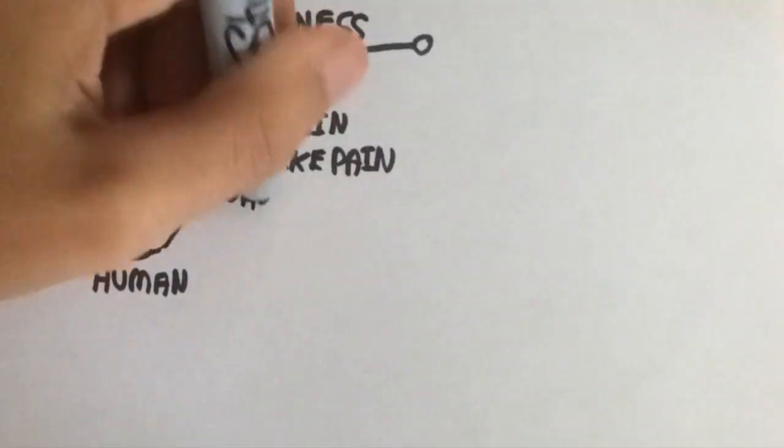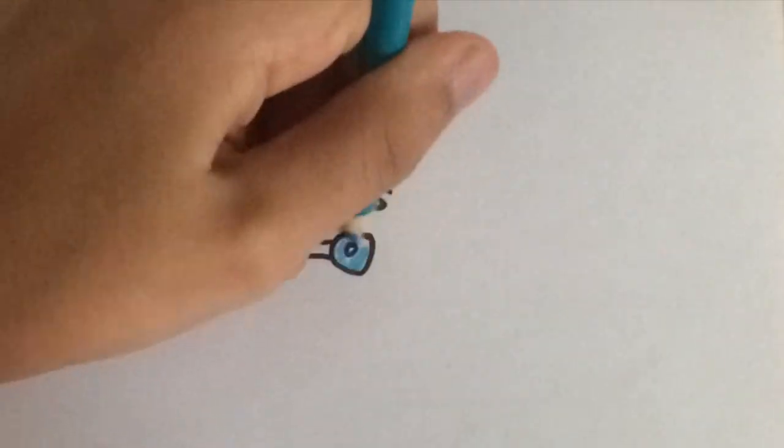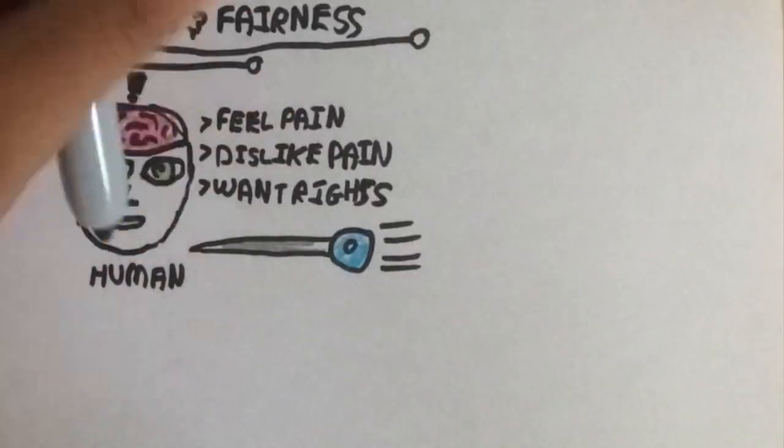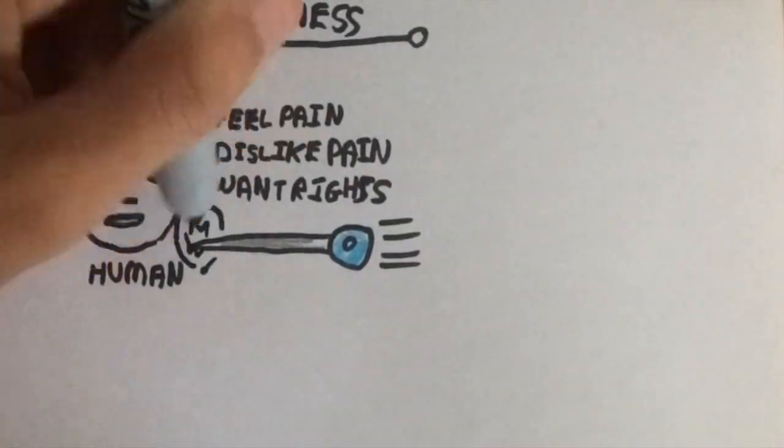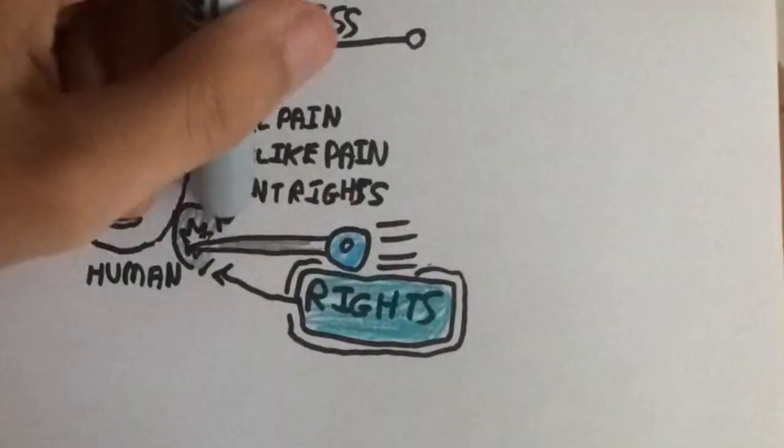Our brains evolve to avoid pain, keeping us alive. We simply want rights because we feel pain and dislike the suffering that is inflicted by it. Rights ensure that we are all happy, that everything is fair,